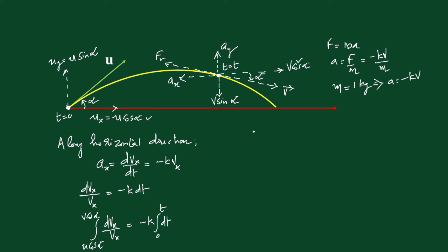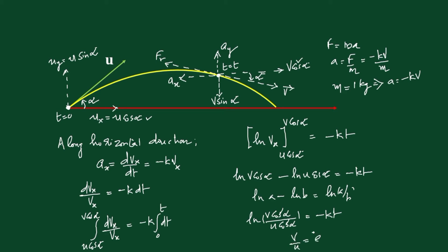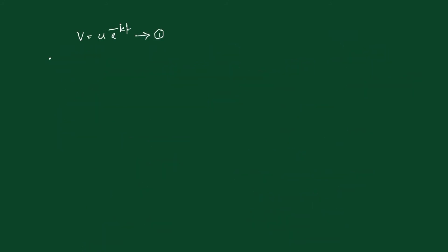After integration, we get ln(vx) evaluated from u cos alpha to v cos alpha, equal to -kt. Applying the limit: ln(v cos alpha) - ln(u cos alpha) = -kt. Using the log property ln a - ln b = ln(a/b), we get ln(v cos alpha / u cos alpha) = -kt. The cos alpha terms cancel, giving ln(v/u) = -kt, so v/u = e^(-kt), therefore v = u e^(-kt). Take this as equation number 1.